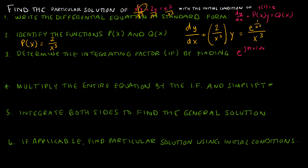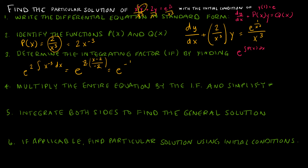Now I'll determine the integrating factor using e to the integral of p(x) dx. Writing p(x) as 2x to the negative 3, the integral of 2x to the negative 3 dx gives 2 times x to the negative 2 over negative 2. Simplifying, the 2 and negative 2 give negative 1, so it's e to the negative x to the negative 2, or e to the negative 1/x squared. That is the integrating factor.